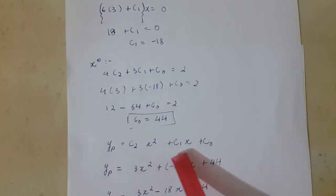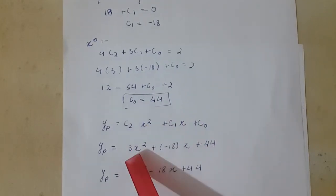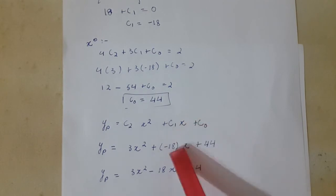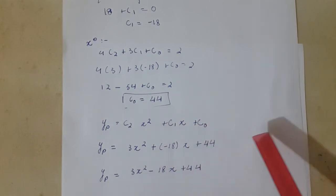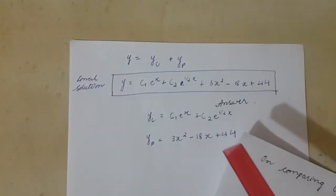yp = c2·x² + c1·x + c0. Now I am putting the values: c2 = 3, c1 = -18 and c0 = 44. We got our yp: yp = 3x² - 18x + 44.